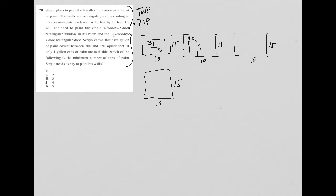Sergio knows that each gallon of paint covers between 300 and 350 square feet. Okay, so one gallon equals 300 to 350 square feet. If only one gallon cans, okay, so one gallon, but this is also one can, right? So one can equals one gallon, which equals 300 to 350 square feet.